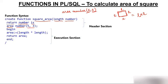Then BEGIN. In the execution section, area is assigned length multiplied by length. For example, if you pass 4, then 4 × 4 = 16, so area will have the value 16. Then you write RETURN area. Finally, to run the function in SQL*Plus you write a forward slash (/).